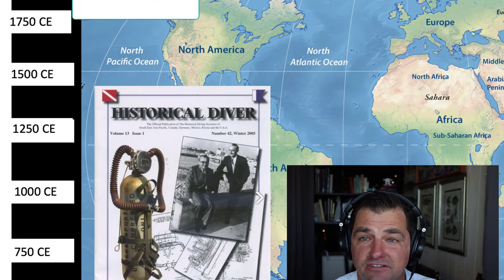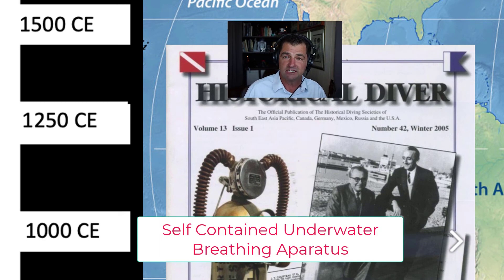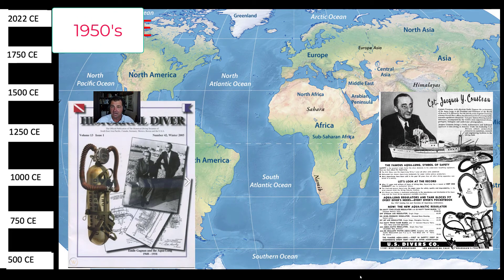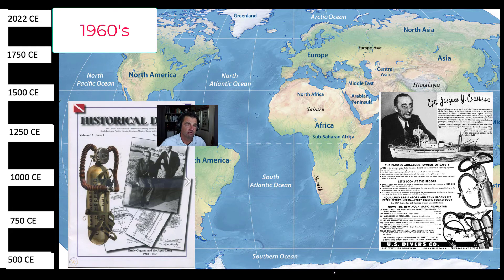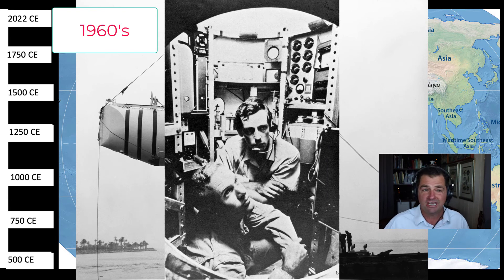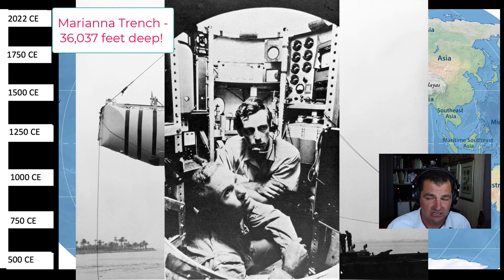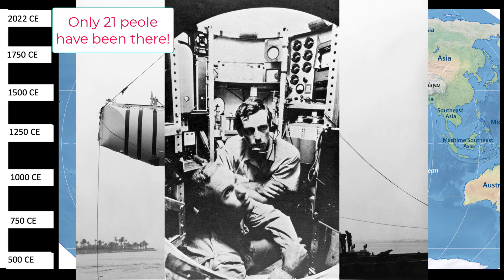In the 1950s, SCUBA — Self-Contained Underwater Breathing Apparatus — was invented by two French scientists: engineer Emile Gagnan and famous marine biologist Jacques Cousteau. This allowed people to stay underwater for extended periods to study the ocean far more effectively than before. In the 1960s, John Walsh and Jacques Piccard took a submarine — designed by a member of Piccard's family — to the deepest location in the ocean: the Mariana Trench, at 36,037 feet deep.